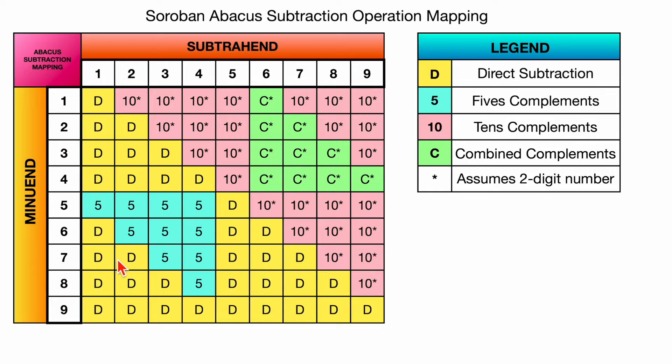Because a seven is represented as a single five bead and two one beads below it. But you can't directly subtract a three or a four from seven because you don't have three or four one beads to subtract. The same thing with the eight and the nine.